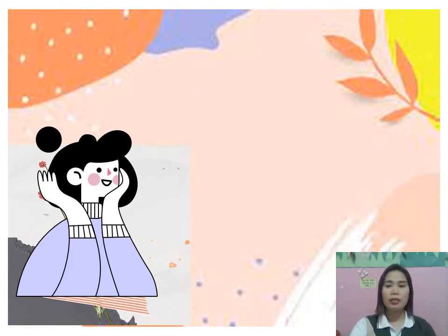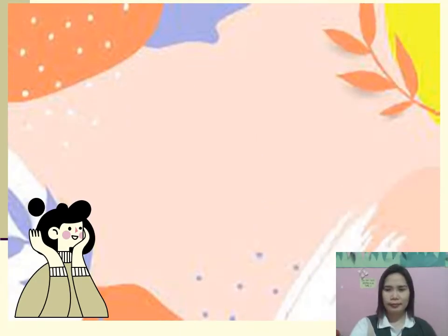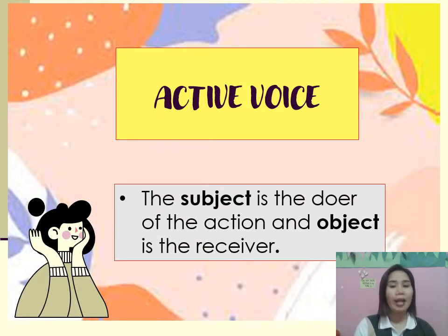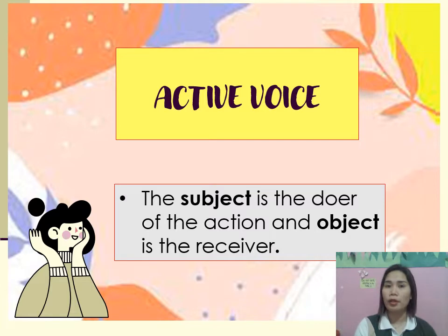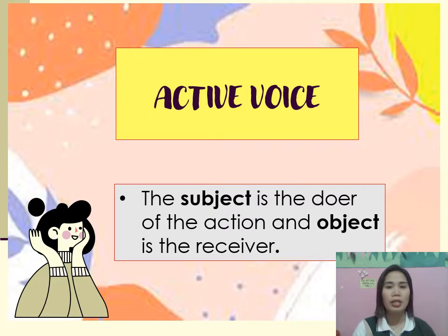The two sentences I discussed illustrate active and passive voice. Today we're going to talk about active and passive voice. First, the active voice — this is the voice we use most of the time. The subject is the doer of the action and the object is the receiver. In active voice, the subject acts upon its verb, like 'My little brother made dinner,' where the subject is the doer of the action.